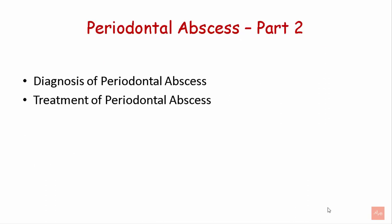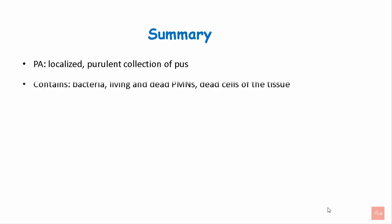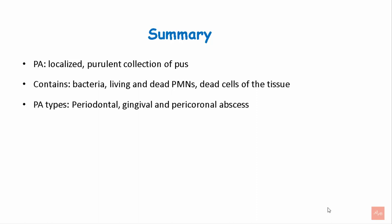In the second part of this series on periodontal abscess, we will study the diagnosis and different treatment approaches. To summarize Part 1: a periodontal abscess is a localized purulent collection of pus containing bacteria, living and dead polymorphonuclear leukocytes, and dead cells of the tissue. Types include periodontal abscess, gingival abscess, and pericoronal abscess.